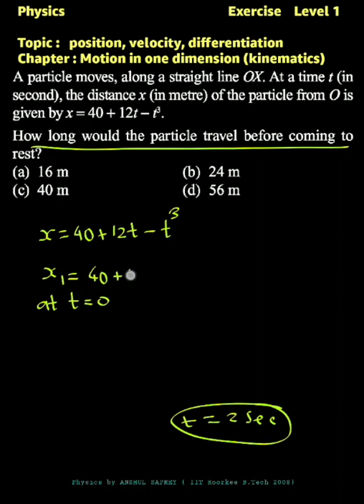That will be equal to 40 plus 12 times 0 minus 0 cubed, so that is equal to 40. Also find x2 at t equal to 2 seconds when velocity is zero.